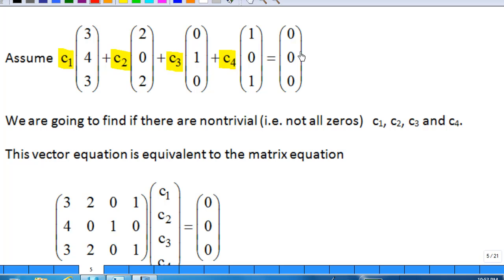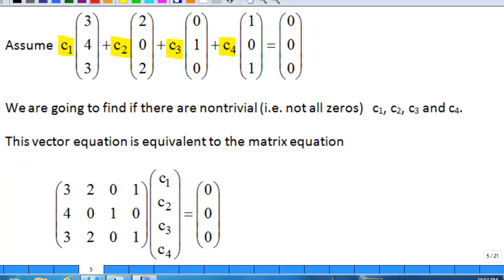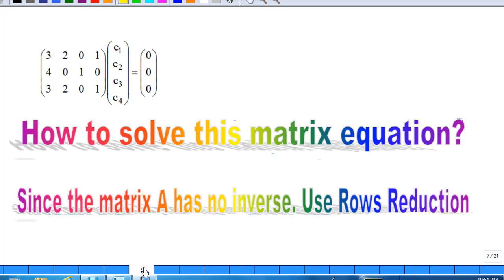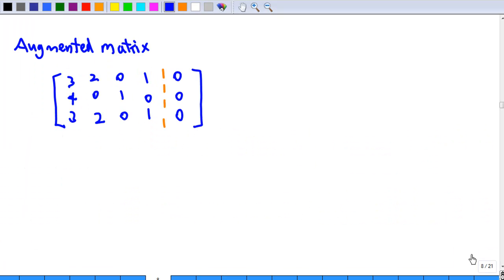This vector equation is equivalent to a matrix equation. So how do we solve this matrix equation? Since the matrix A has no inverse, we must use row reduction. How do we start the row operations? We must start with the augmented matrix first, which is 3 4 3, 2 0 2, 0 1 0, 1 0 1, and 0 0 0.